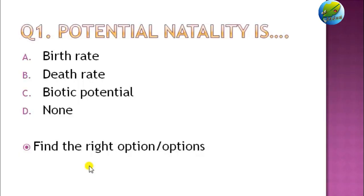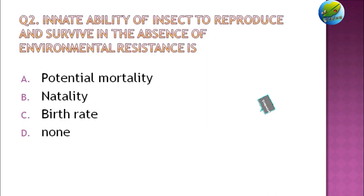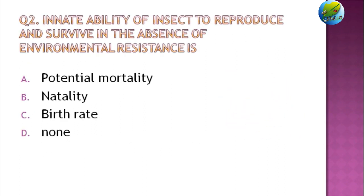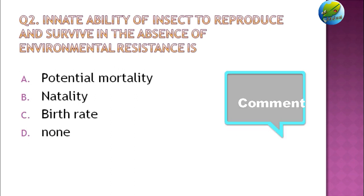Find the right option or options. First: Potential natality is — birth rate, death rate, biotic potential, or none of the above? Second: The innate ability of an insect to reproduce and survive in the absence of environmental resistance is — biotic mortality, natality, birth rate, or none of the above?